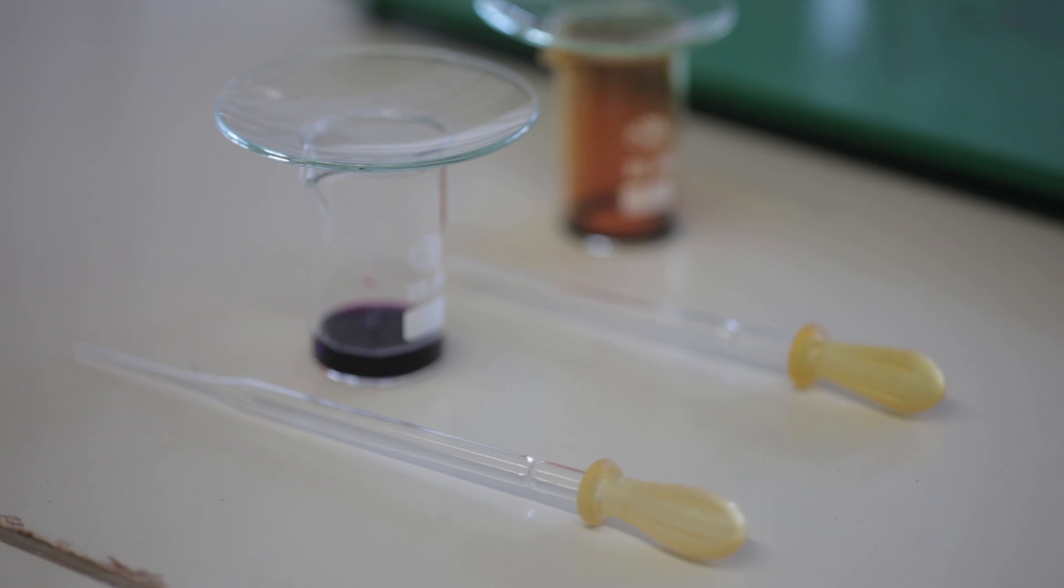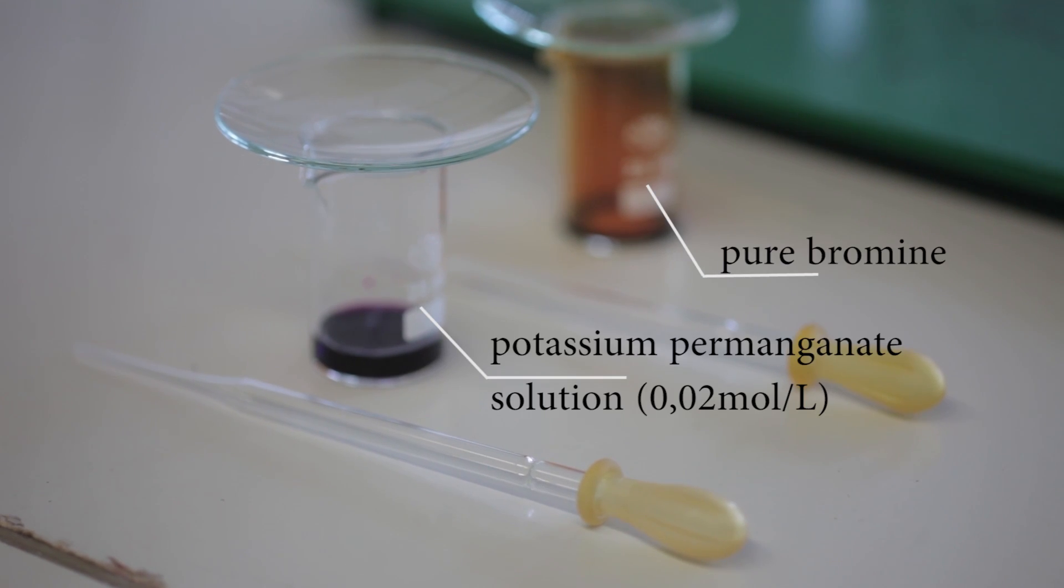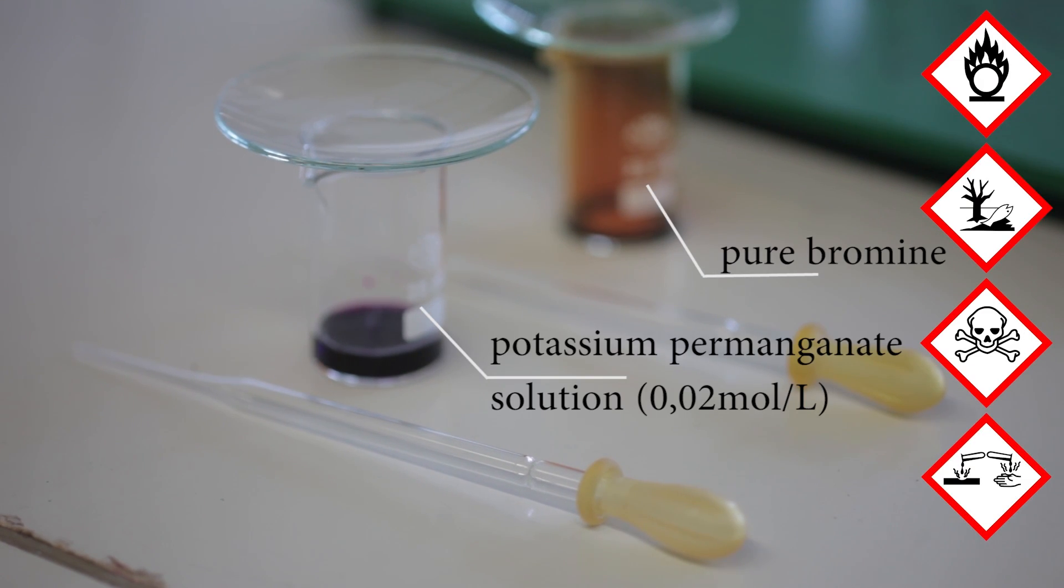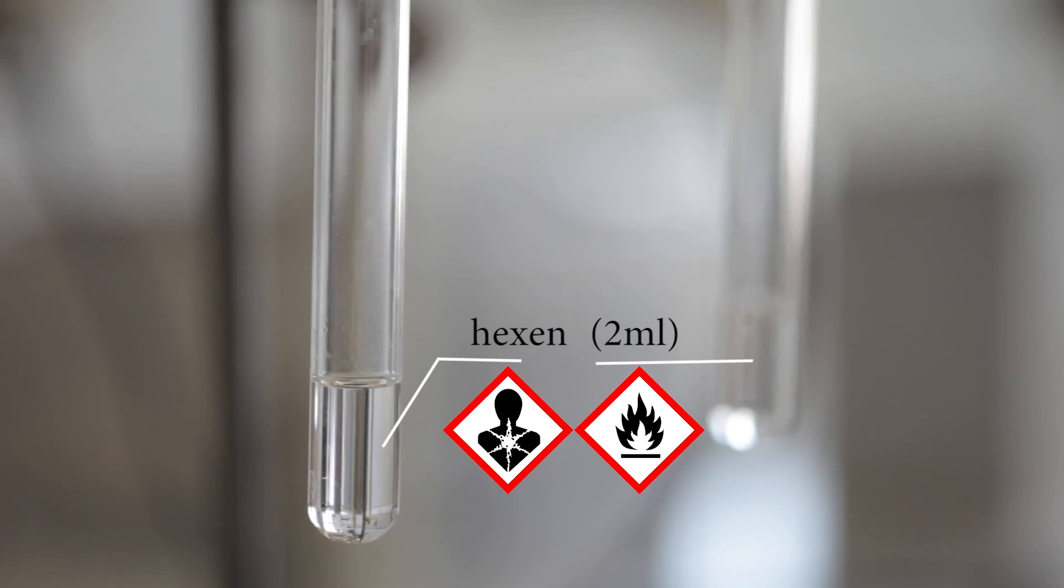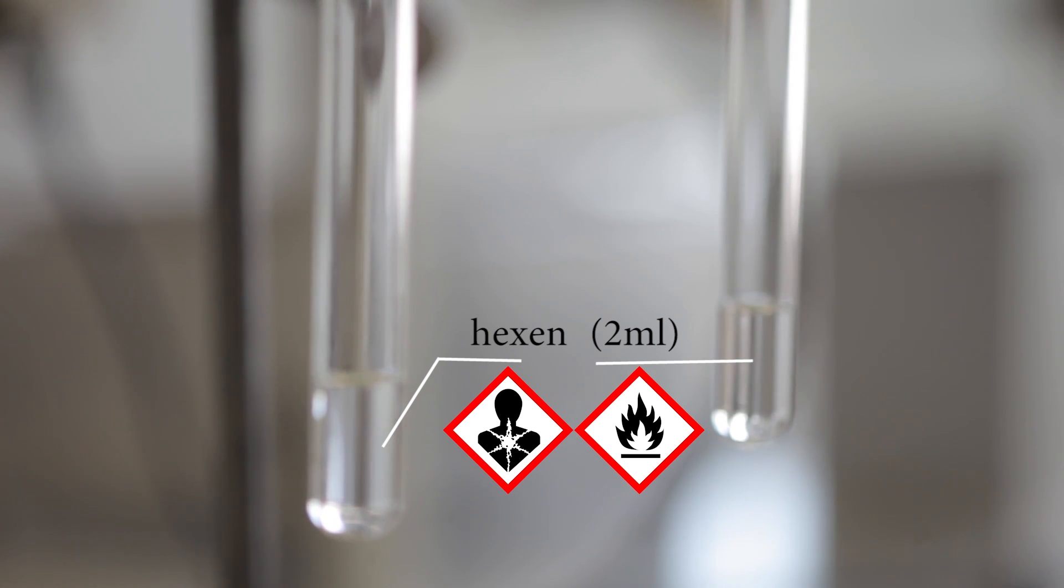For this experiment we need pure bromine, hexine, and potassium permanganate solution with a concentration of 0.02 moles per liter. The whole experiment needs to take place in a laboratory hood.